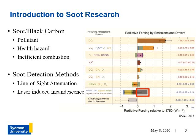Soot is a common byproduct of hydrocarbon combustion and is often evidence of inefficiencies within a combustion system. Soot can be recognized by yellow or orange light in a common flame. The light is actually the result of the incandescence of soot particles.